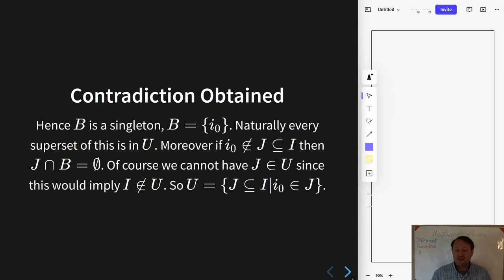Well, take J to be any other set, which is to say J is going to be some subset of I which does not contain i₀. Well, let's think about what would happen if we were to have that in our ultrafilter. Then by closure under intersections, J intersect B, both of them being elements of the ultrafilter,